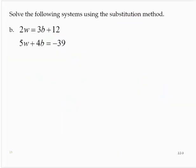Here we have the system 2w equals 3b plus 12, and 5w plus 4b equals negative 39.